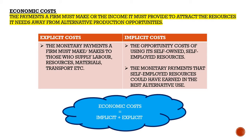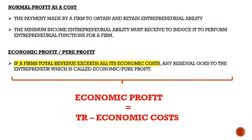Implicit costs are the opportunity costs of using self-owned, self-employed resources — the monetary payments that self-employed resources could have earned in the best alternative use. For example, if we have a house with a spare room and we're using that spare room as our office, our implicit costs would be the rent we could have earned if we let that room out instead. Economic costs are implicit costs plus explicit costs.